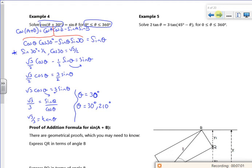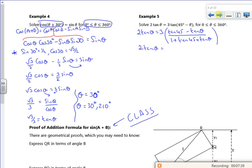I wonder how much of example 5 I can do, because I want to leave this one for class. This is a definite in class one. So I'll see how much I can do. So we've got 2 tan θ = 3(tan(45° - θ)). I'm going to use tan(A - B). So I've got (tan 45° - tan θ)/(1 + tan 45° tan θ). That's using the formula. Tan 45° is 1, so I've got (1 - tan θ)/(1 + tan θ).